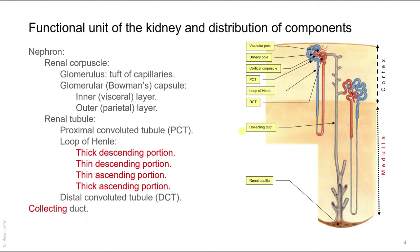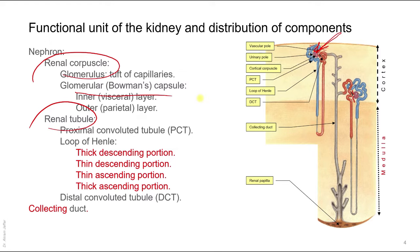The functional unit of the kidney is the nephron and there are about one million nephrons per kidney. They are composed of a renal corpuscle and a renal tubule. The renal corpuscle consists of a glomerulus, which is a tuft of capillaries where filtration takes place, and the glomerular or Bowman's capsule, which is like a cup with a double layer — a visceral inner layer that surrounds the glomerulus and an outer layer, with a space between them.